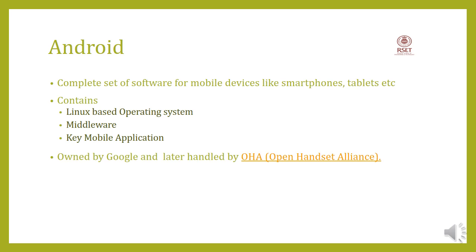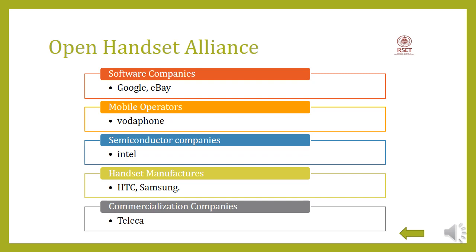Android is owned by Google and handled by OHA — the Open Handset Alliance. The Open Handset Alliance is a consortium of 84 companies like Google, Vodafone, Intel, Samsung, etc. These companies are categorized into five types: software companies like Google and eBay, mobile operators like Vodafone and Airtel, semiconductor companies like Intel, handset manufacturers like HTC and Samsung, and commercialization companies. This consortium was created on November 5, 2007, and is led by Google. It was created to advance open standards and help in the manufacturing of handsets using Android platforms.